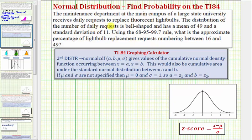We're given the maintenance department at the main campus of a large state university receives daily requests to replace fluorescent light bulbs. The distribution of the number of daily requests is bell-shaped and has a mean of forty-nine and a standard deviation of eleven.